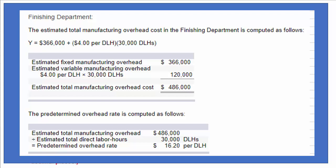We go through that same logic for the finishing department. They've given us the estimated fixed manufacturing overhead cost and an estimate of four dollars per direct labor hour. With 30,000 direct labor hours, we add the variable manufacturing overhead to the fixed manufacturing overhead to get the total estimated manufacturing overhead cost. We then divide that total by the estimated 30,000 direct labor hours to compute the predetermined overhead rate for the finishing department. That's all there is to part one of this problem.